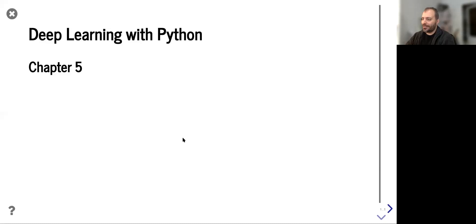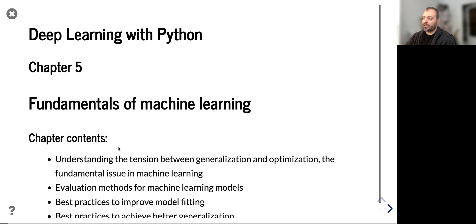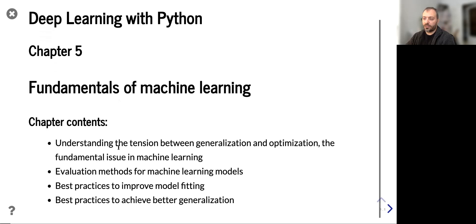Hello everyone. My name is Dimitris and this is Deep Learning with Python, the fifth chapter of the book. In this chapter we will see the fundamentals of machine learning. This is more or less again a theoretical chapter; from next session it will be more deep in code. This is the last theoretical chapter that we will go through.